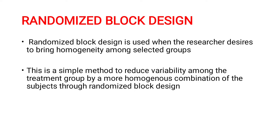The second criterion is you should have an experimental group and a control group. A control group is very important in order to compare results. The third is some manipulation or treatment is needed to find out the results. So randomization, control group, and manipulation — these three criteria are necessary for any experimental research design.